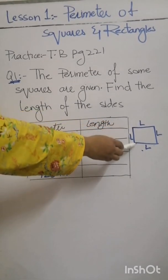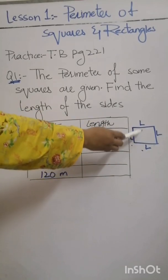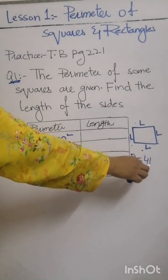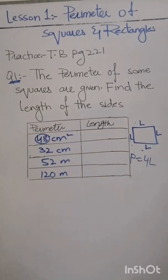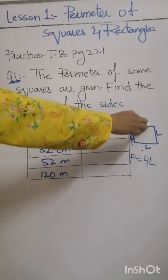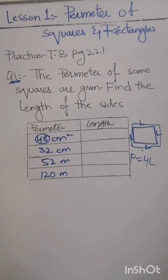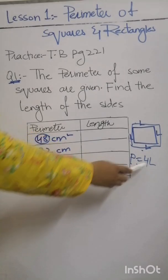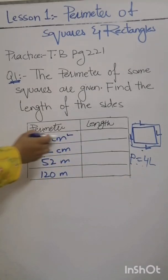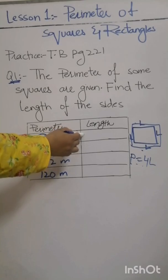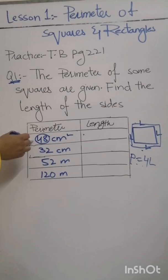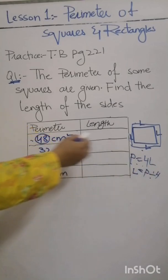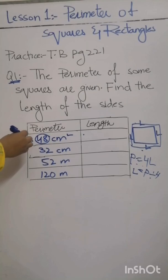As we know, a square has four equal sides and each length is equal, so its perimeter is four multiplied by L. Basically, perimeter is the total distance around the enclosed figure. So perimeter is 4 × L. If we have a perimeter and we want to find one side length, we divide the perimeter by four.